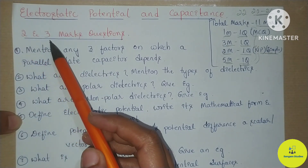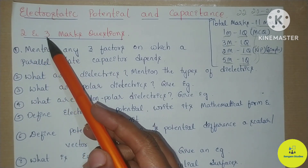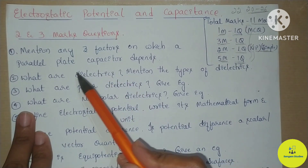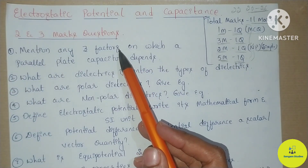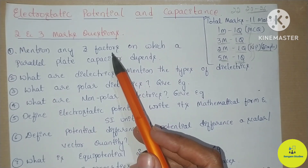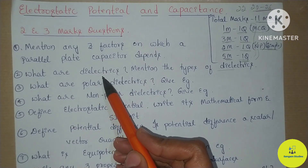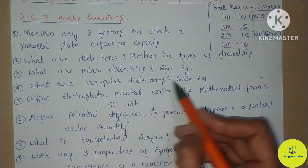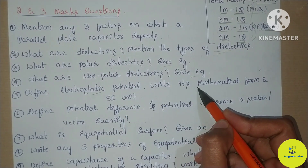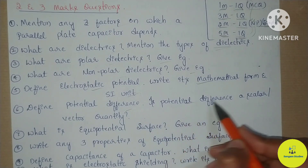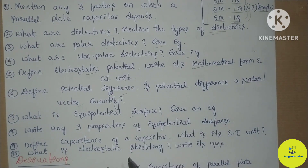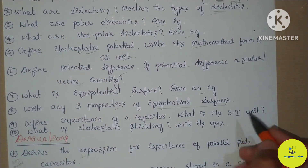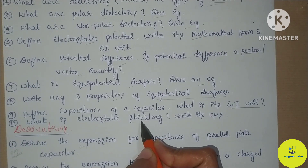In my last video, two and three mark questions were covered — at short notice, because two and three mark questions almost overlap. First question: parallel plate capacitor and the factors it depends on — two marks, two or three points are enough. That becomes a three-mark question too. Next: dielectrics — all types: polar dielectrics with examples, nonpolar dielectrics with examples. Electrostatic potential: mathematical form, SI unit. Potential difference: scalar quantity, vector quantity. Equipotential surface: example and properties. Capacitance of a capacitor: mathematical form, SI unit. Electrostatic shielding and its uses.